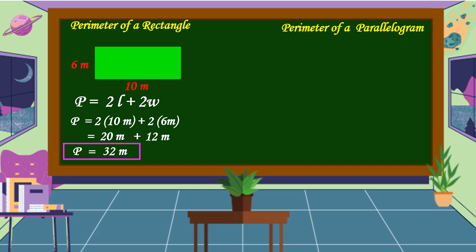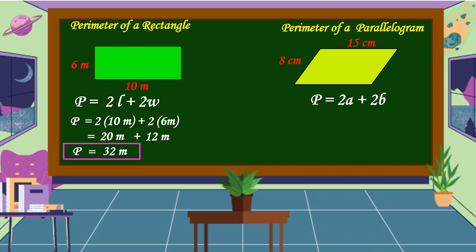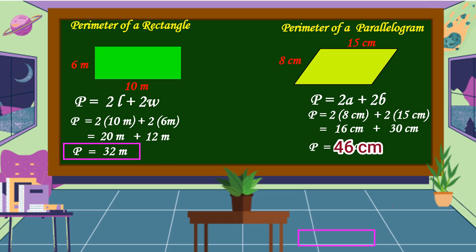Next, we're going to solve the perimeter of a parallelogram with a base of 15 centimeters and a side of 8 centimeters. The formula is P = 2A + 2B, where A is the side and B is the base. Substituting: P = 2 times 8 centimeters plus 2 times 15 centimeters. 2 times 8 equals 16 centimeters, plus 2 times 15 equals 30 centimeters. Adding: 16 centimeters plus 30 centimeters equals 46 centimeters. This is the perimeter of the parallelogram.